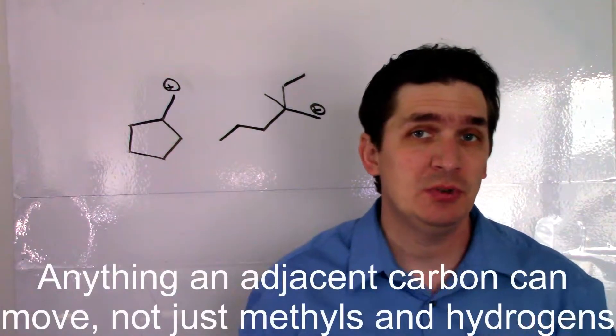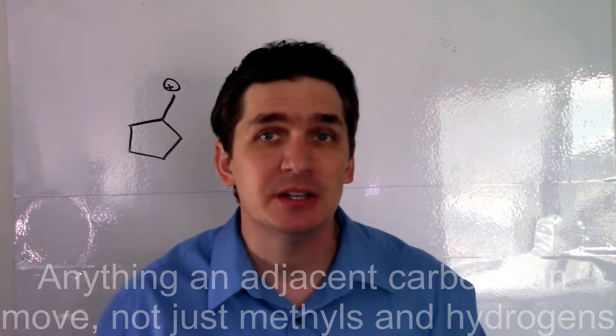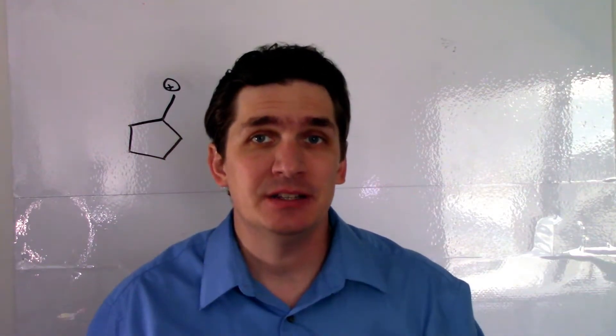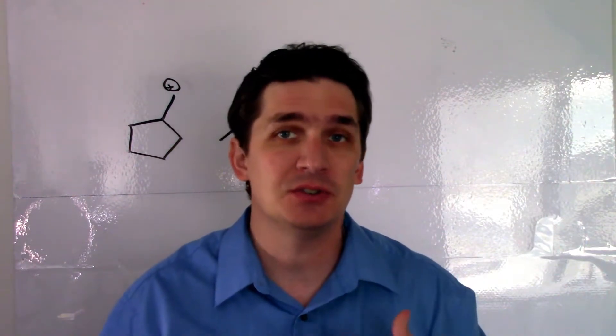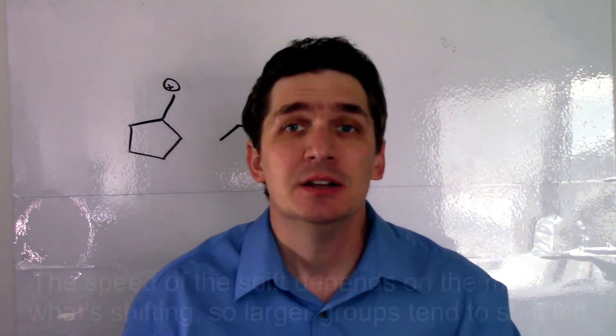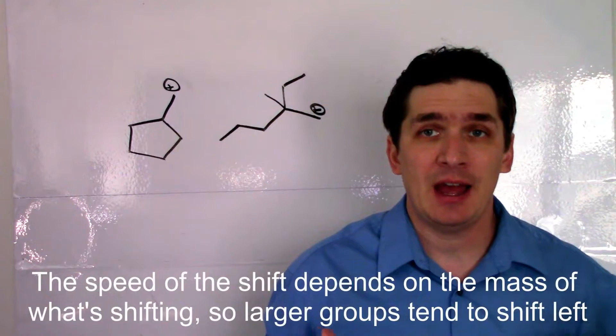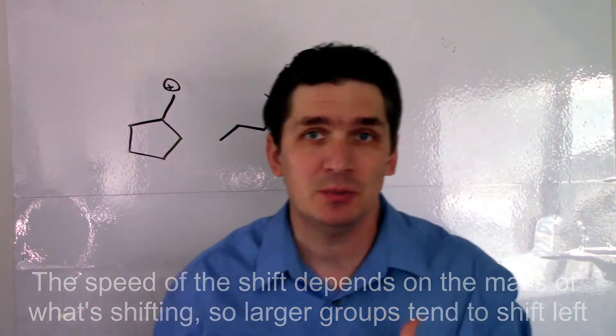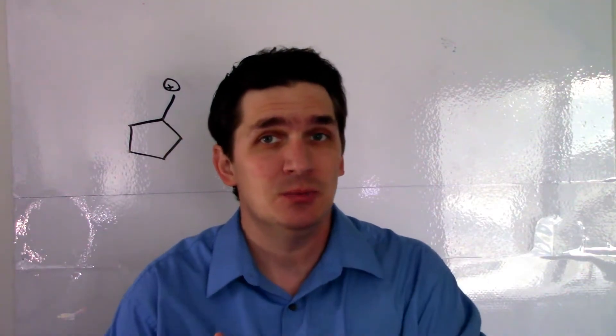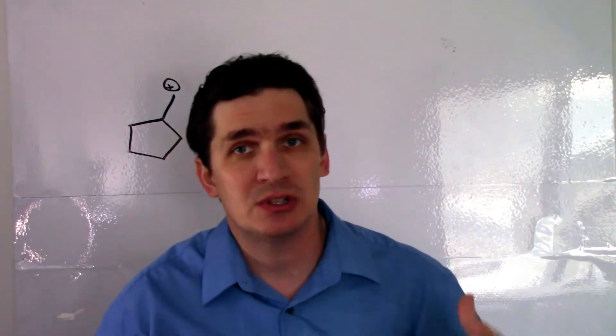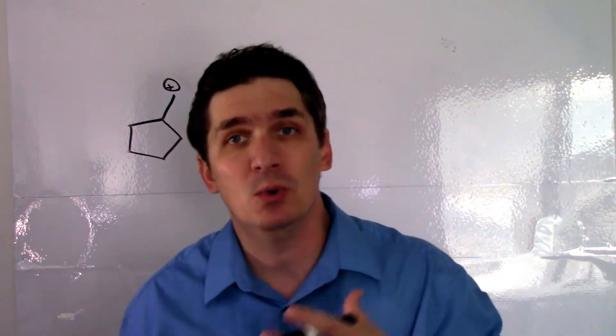We do hydrogen and methyl shifts because they're pretty common, but the reason they're pretty common is that these tend to be limited by what goes to the square root of the mass of what's moving. So if you have a really heavy group, like a methyl group that weighs 17 AMUs versus a hydrogen that weighs 1 AMU, the hydrogen is gonna move pretty quickly because it's pretty light, but that methyl group is gonna move slower than the hydrogen because it weighs a lot more.